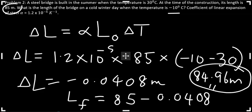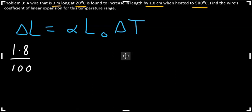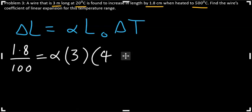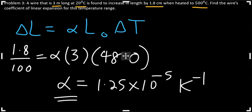Problem 3: A wire 3 meters long at 20 degrees Celsius increases in length by 1.8 cm when heated to 500 degrees Celsius. Find the coefficient of linear expansion. Converting 1.8 cm to meters, with original length 3 meters and delta T equal to 500 minus 20 equals 480, solving for alpha gives 1.25 times 10 to the minus 5 per Kelvin. Thanks for watching.